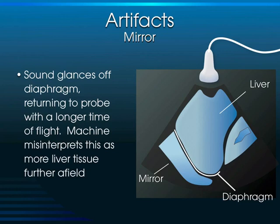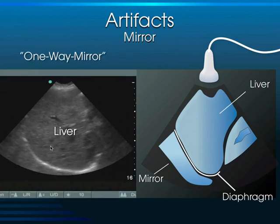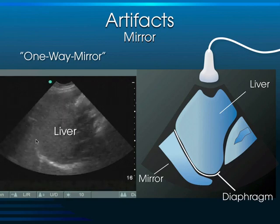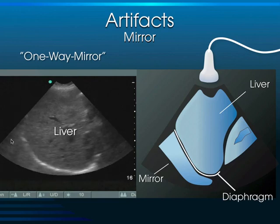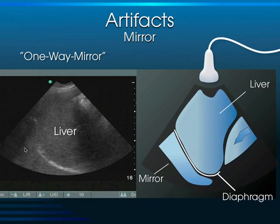The mirror image artifact: as sound travels through the liver and encounters the diaphragm, it comes back to the transducer and the machine mistakenly places a mirror image of the liver above the diaphragm in the chest. This is normal — it tells us there's no blood or fluid in the chest. When you lose the mirror image artifact, that indicates fluid or blood in the chest, because the sound can now cross the diaphragm and the area above appears black.